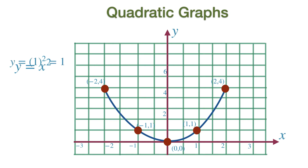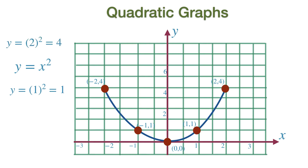For example, squaring X coordinate 1 gives the Y coordinate of 1, and squaring X coordinate 2 gives the Y coordinate 4, and so on. All the points that lie on the curve follow the same rule. This is the graph of Y equal to X squared, an example of a quadratic function.